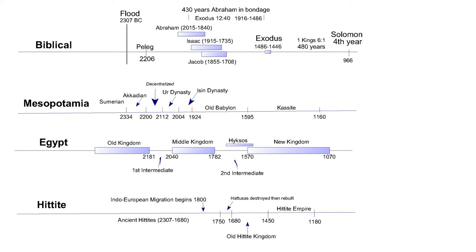The time period we have covered so far is from the Great Flood until the end of the Old Kingdom of Egypt, and also the end of the Akkadian Kingdom. This same time period is covered in four chapters of the book of Genesis, chapters 8 to 11.